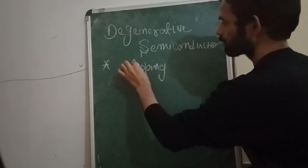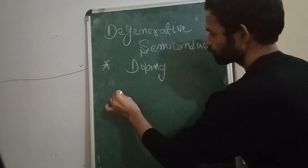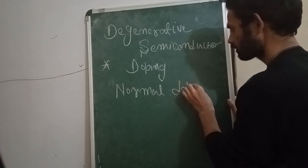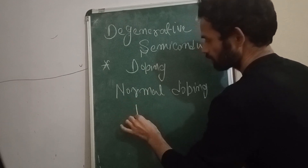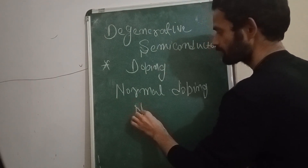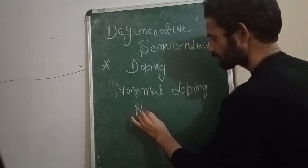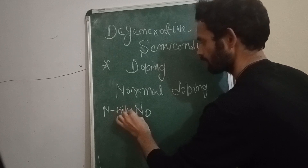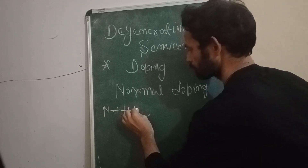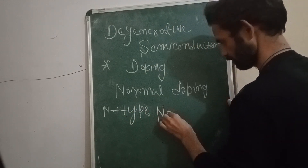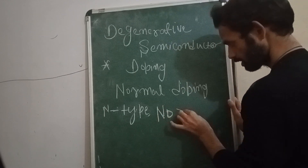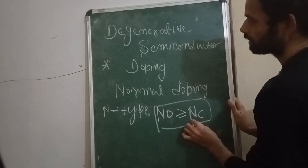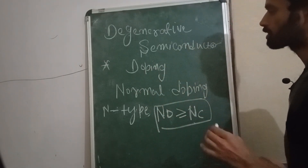As we know, when we are doping an intrinsic semiconductor material with normal doping, the donor ion concentration — in case of n-type — if this donor ion concentration is greater than or equal to the density of states in the conduction band, then we can say that the semiconductor is a degenerative type semiconductor material.